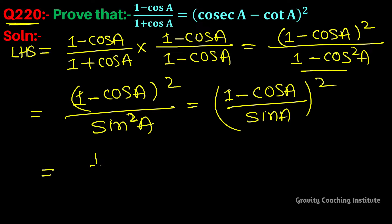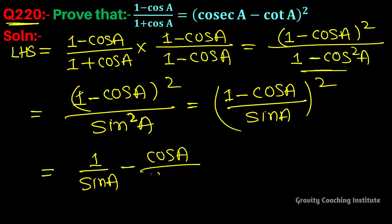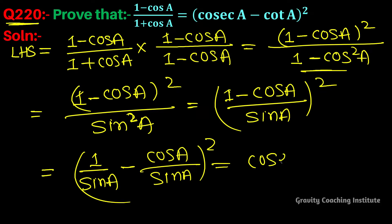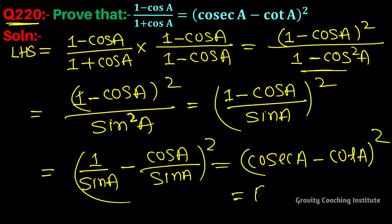Now we separate the fraction term-wise: (1/sin A - cos A/sin A)². Since 1/sin A = cosec A and cos A/sin A = cot A, this becomes (cosec A - cot A)² = RHS. Hence proved.